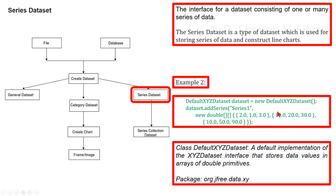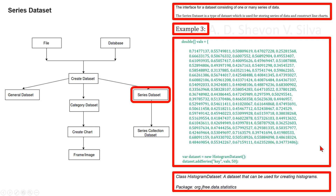The DefaultXYZDataset is in package org.jfree.data.xy. As a third example, we can consider the following code segment.